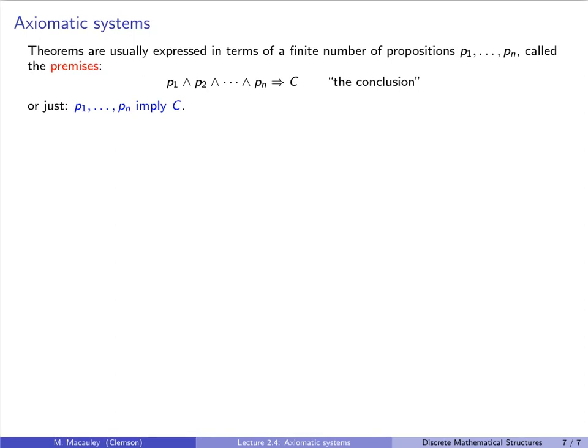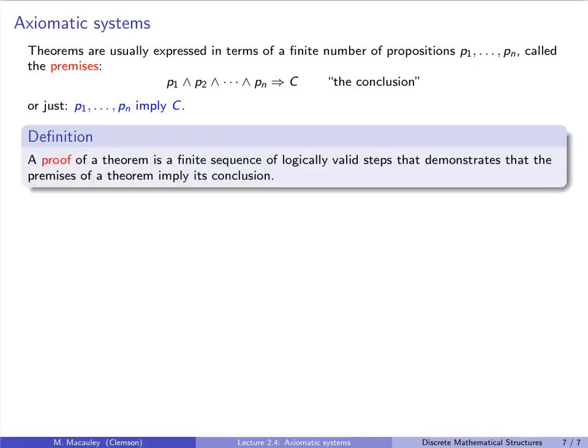In an axiomatic system theorems are usually expressed in terms of a finite number of propositions say p1 up to pn called the premises. So we'll write if p1 and p2 and all the way up to pn are all true then that implies C the conclusion or just we'll say p1 up to pn imply C. A proof of a theorem is a finite sequence of logically valid steps that demonstrates that the premises of a theorem imply its conclusion. What constitutes a proof can be subjective and it depends on the audience. Are you trying to convince a group of high school students or a group of research math faculty? Even if you're just trying to convince one group of similar people people have different standards as to what is a convincing argument and what's not.